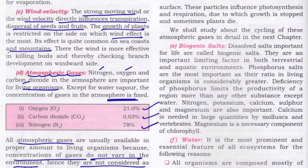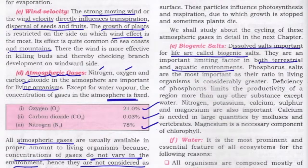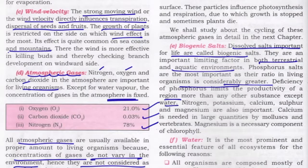Biogenic salts — dissolved salts important for life are called biogenic salts. They act as a limiting factor in both terrestrial and aquatic environments. Phosphorus salts are the most important, as their ratio in living organisms is greater. Deficiency of phosphorus limits the productivity of a region more than any other substance except water. Calcium is needed in large quantities by molluscs and vertebrates, and magnesium is a necessary component of chlorophyll.